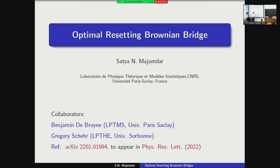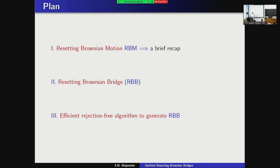This is recent work done in collaboration with Gregory Sher, my long-time collaborator, and also with our graduate student Benjamin D. Bruin. This is on the archive and will appear in PRL soon. Here are the three parts to my talk. In the first part, I'll make a brief recap of the resetting Brownian motion — you have already heard twice about stochastic resetting this morning, but today I'll focus on the first passage aspects. Then I'll come to the main body on the resetting Brownian Bridge, and if time permits, an algorithmic question on how to generate such bridges in a rejection-free way.